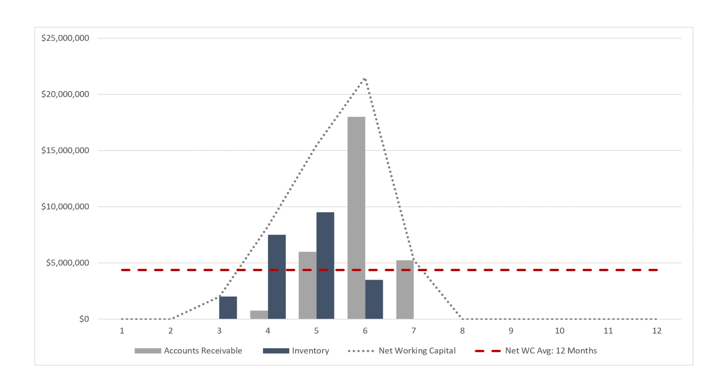To highlight why this is so important, assume a scenario where you've negotiated a purchase price for this business that does not include a working capital adjustment, and that you can pick when you assume control. In which month would you most want to assume control? Because this is a cash-free, debt-free transaction, you would likely assume control when the net working capital balance is at its highest in June. Remember that you don't receive the cash as the buyer, so you might as well pick a time where all working capital would be transferred. The challenge, of course, is that the seller would prefer to transact in a month with zero working capital balance because they get to keep the cash — which is why working capital needs to be normalized.